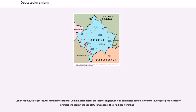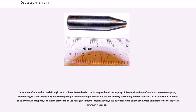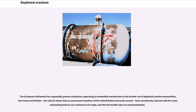Louise Arbour, Chief Prosecutor for the International Criminal Tribunal for the former Yugoslavia, led a committee of staff lawyers to investigate possible treaty prohibitions against the use of DU in weapons. Their findings were that a number of academics specializing in international humanitarian law have questioned the legality of the continued use of depleted uranium weapons, highlighting that the effects may breach the principle of distinction between civilians and military personnel. Some states and a coalition of more than 155 non-governmental organizations have asked for a ban on the production and military use of depleted uranium weapons. The European Parliament has repeatedly passed resolutions requesting an immediate moratorium on the further use of depleted uranium ammunition, but France and Britain — the only EU states that are permanent members of the United Nations Security Council — have consistently rejected calls for a ban, maintaining that the health risks are unsubstantiated.